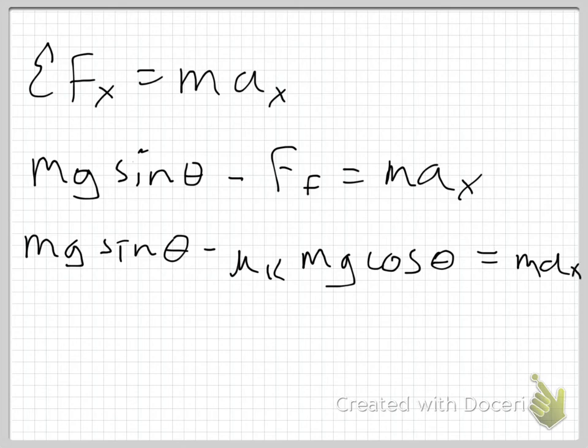So let me just make that substitution. Mg sine of theta minus mu kinetic times the normal force, I already know that that's mg cosine of theta, and that is equal to max. So something interesting also happens here. I've got a mass term in every term here. There's m here, m here, m here. So those are going to go away. I just divide the whole thing by m. Which makes sense because I'm asking you for an acceleration. And think about the units of acceleration, meters per second squared. Nowhere in there is a kilogram. So I actually expect my masses to go away.